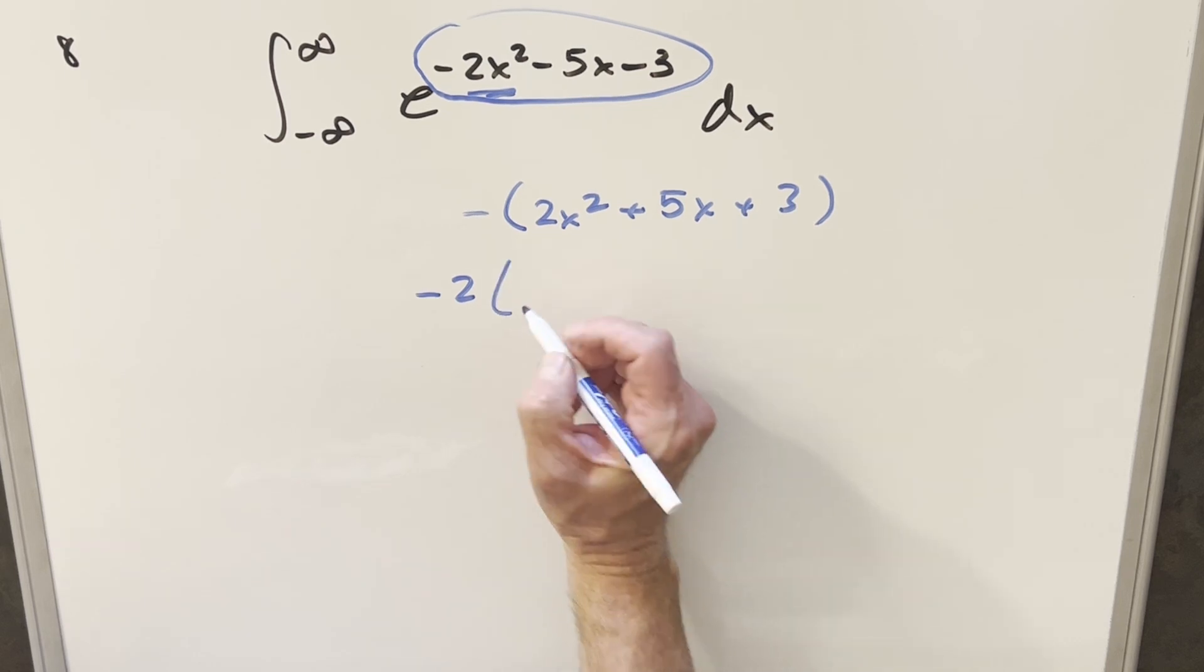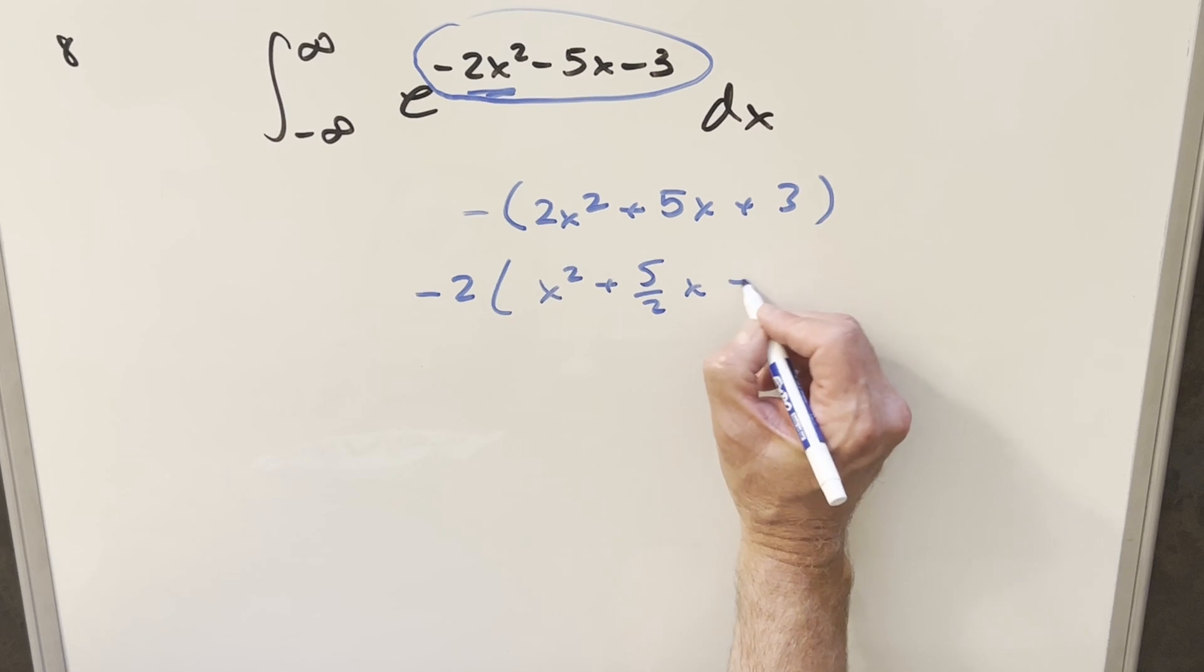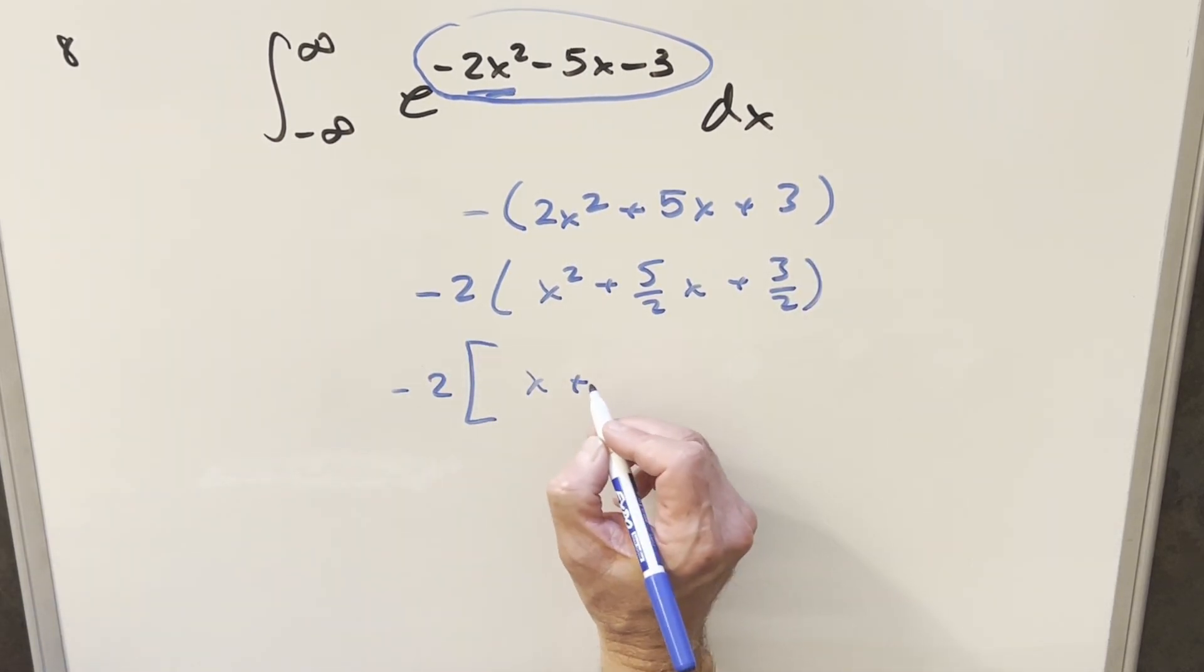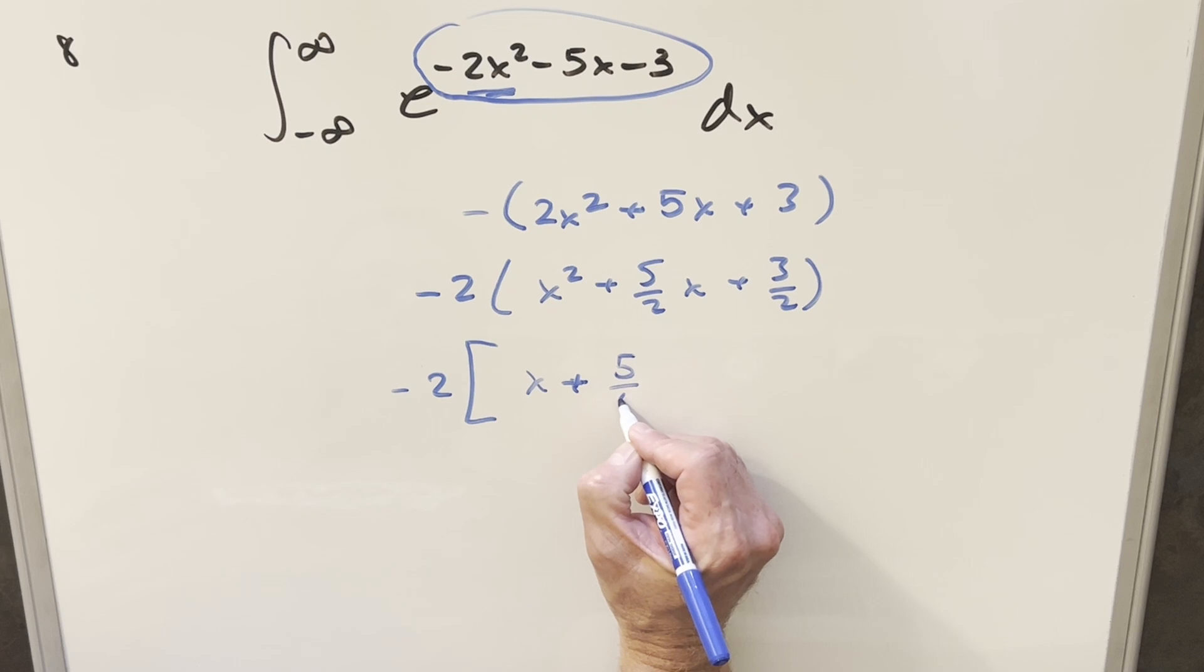So we're going to write this as minus 2x squared plus 5 halves x plus 3 halves. And then completing the square, what's going to happen here, we're going to have x plus this part plus this value, but 1 half of it. So we're going to need here 5 over 4.